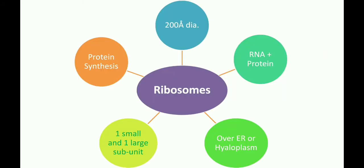Starting with ribosomes: ribosomes are tiny spherical bodies found in both prokaryotes as well as eukaryotes. They are a complex of RNA and proteins with a diameter of approximately 200 angstrom. In prokaryotic cells, ribosomes are found scattered freely in the cytoplasm. But in case of eukaryotes, they occur freely in the hyaloplasm or are found attached to the outer membrane surface of the endoplasmic reticulum.